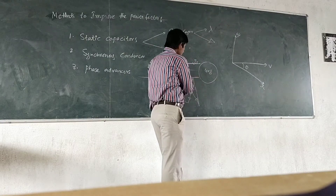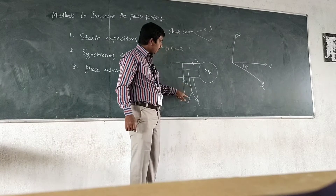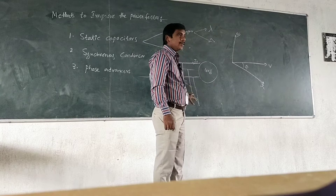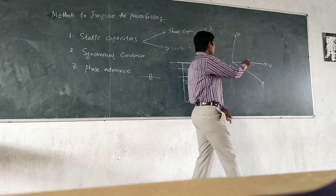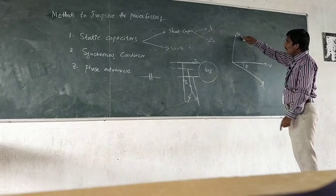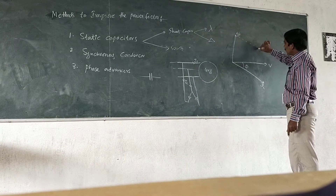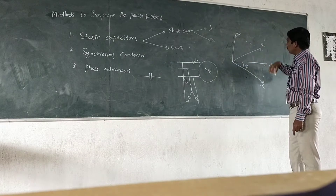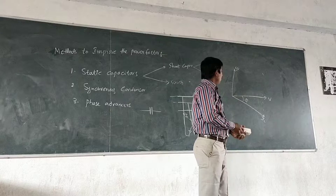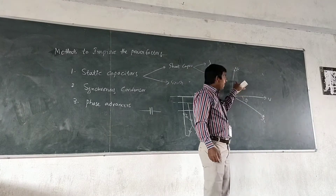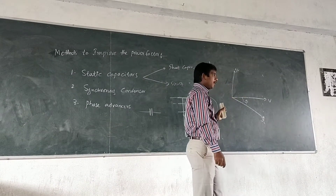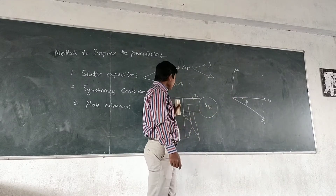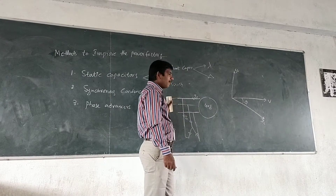Similarly, IC — the capacitors are connected in star and take the leading current. This leading component of current neutralizes the lagging component of current. The resultant current is the resultant of IL and IC. Capacitors give the reactive power required for the load instead of drawing it from the source — source means the transformer.